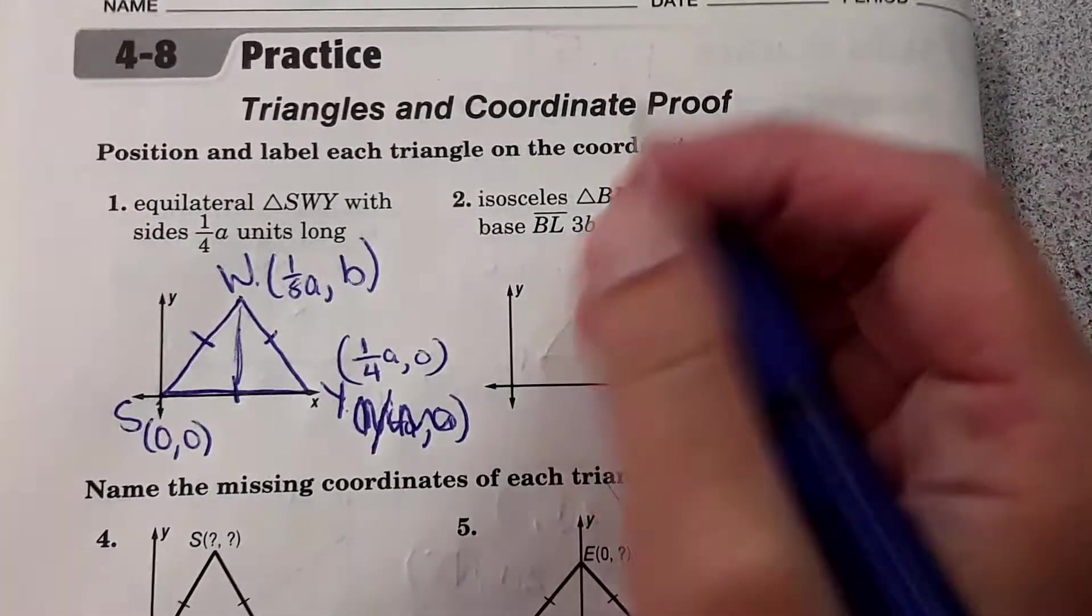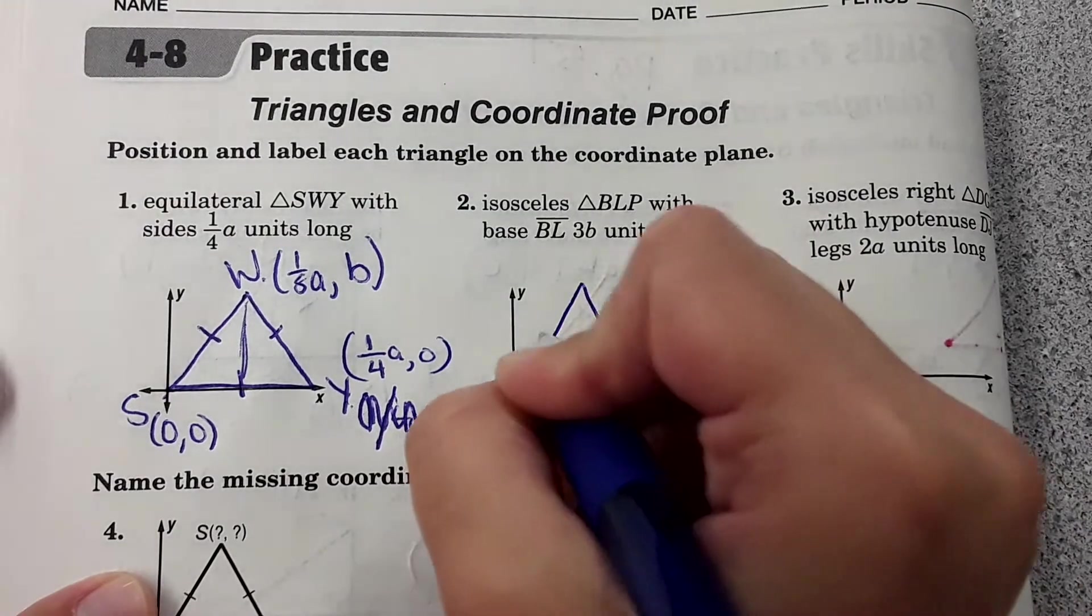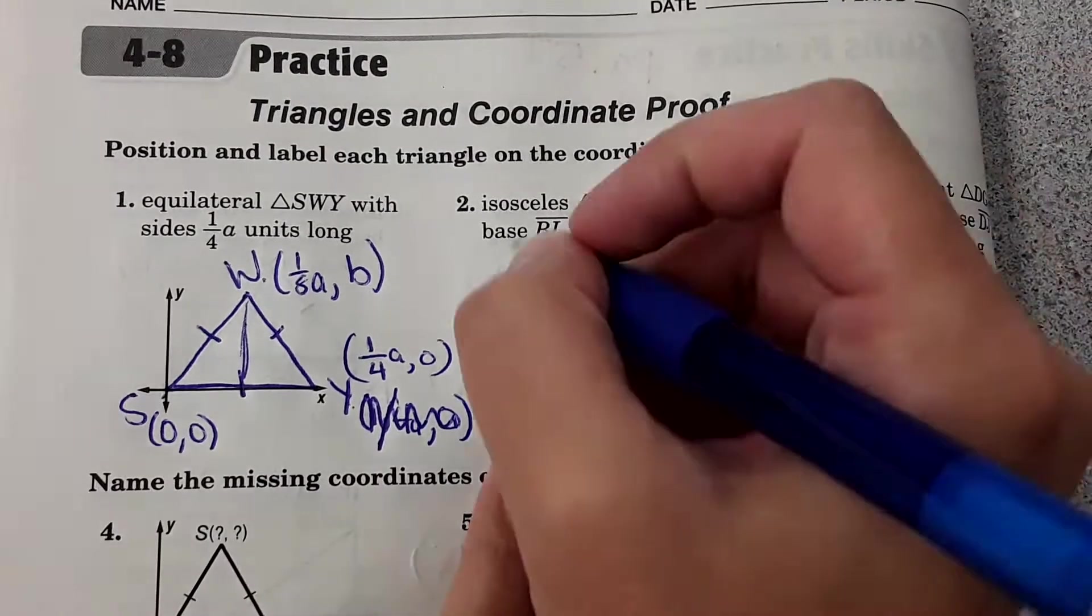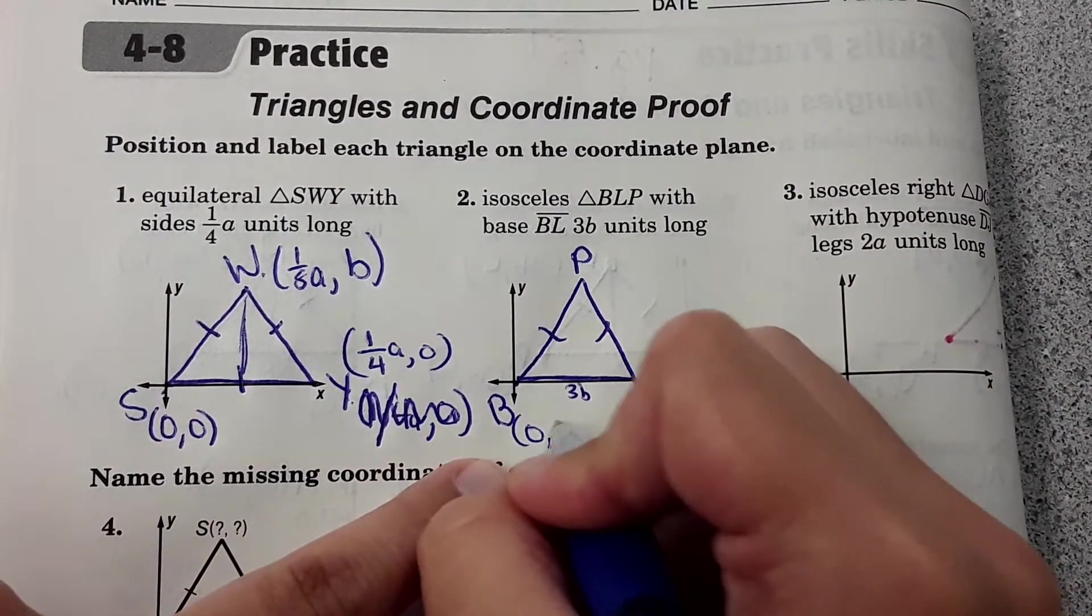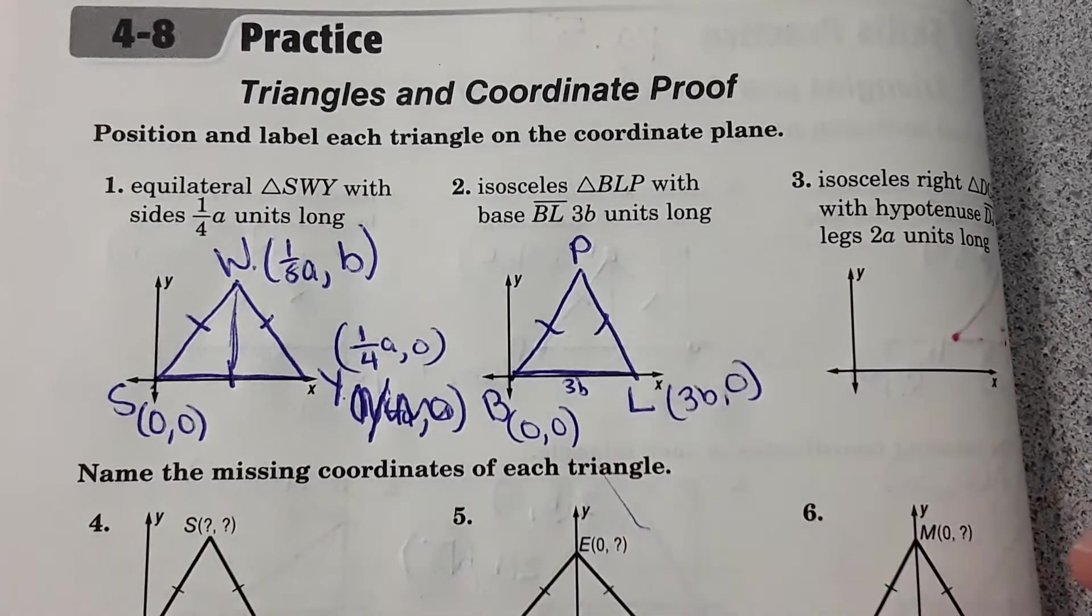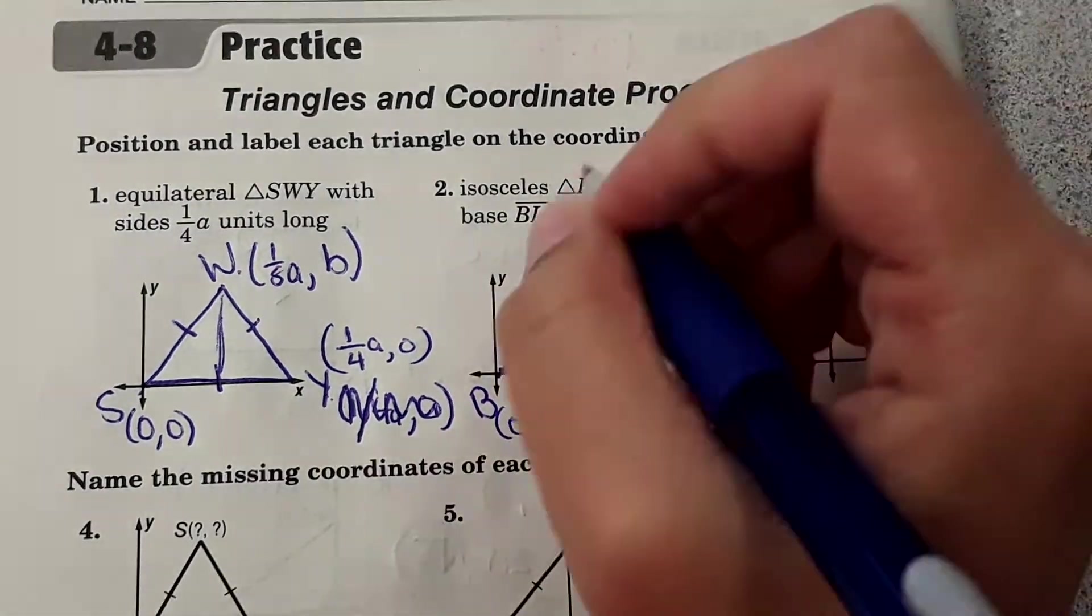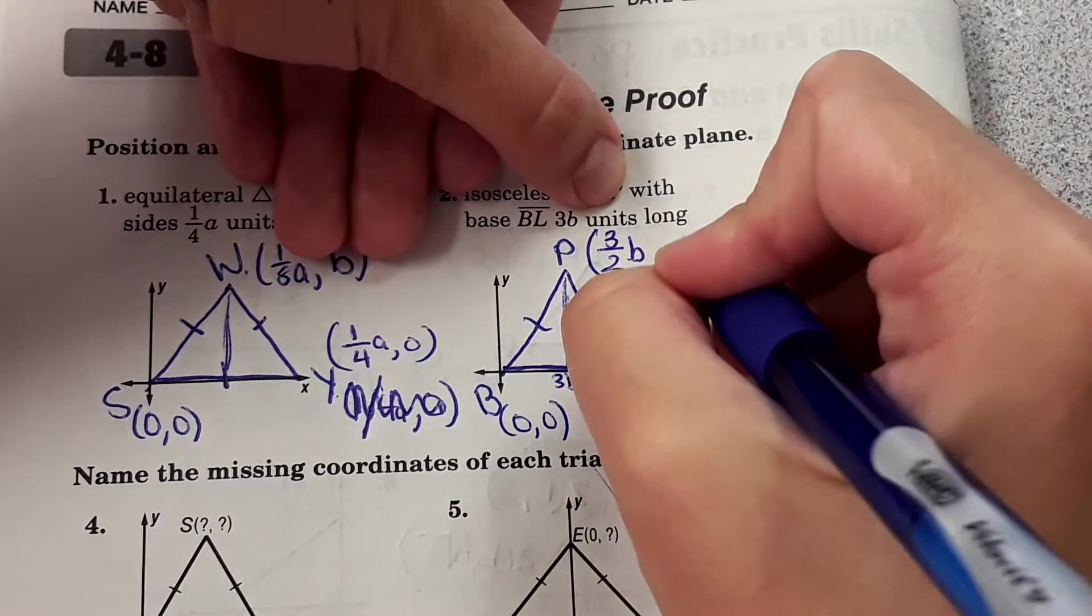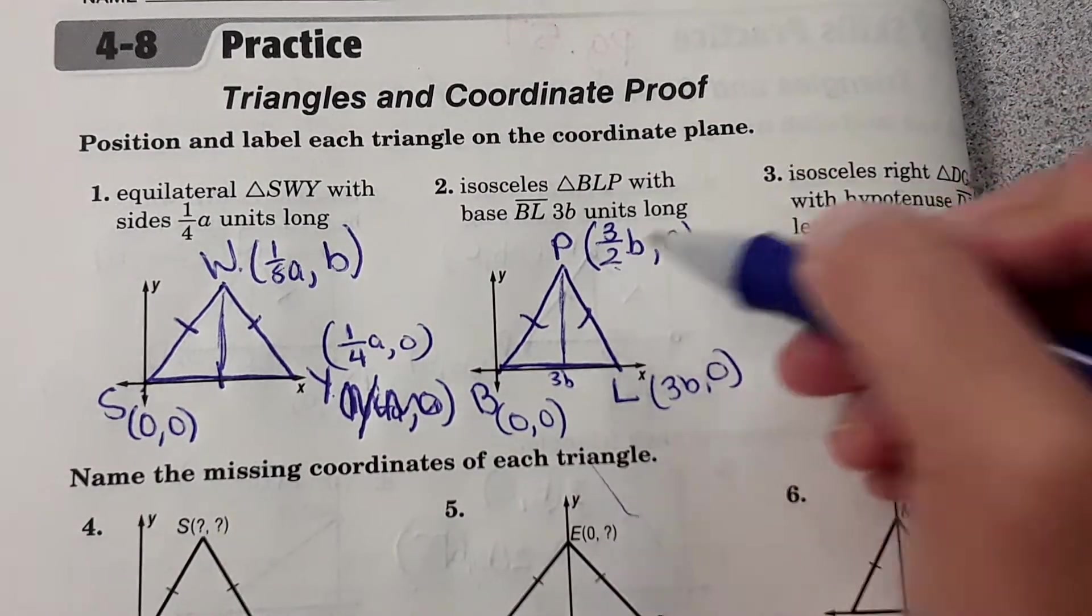Okay, number two: isosceles BLP. B L P, B L P. With base BL is 3B units long. B is at zero zero, and L would be at 3B zero. And then P is at that halfway point. The way they do it on the answer key is they do three halves, three halves B, and then C. We don't know the height. You could also say that's 1.5 B.